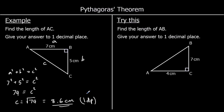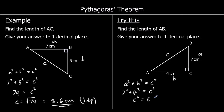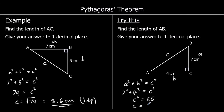One for you to try. Again, we're finding the longest side in a right angled triangle, so the longest side we're going to call c. Pythagoras' theorem says a squared plus b squared equals c squared, which means 7 squared plus 4 squared equals c squared. Working that out on the calculator gives 65, so c squared is 65. Square rooting both sides, the square root of 65 to one decimal place is 8.1 centimeters.